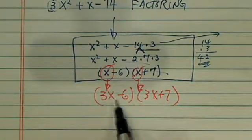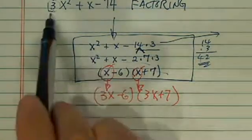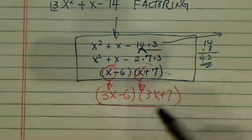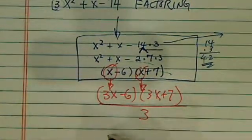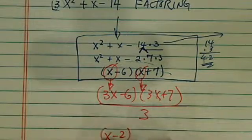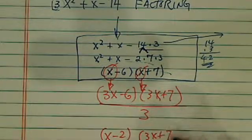Now, you notice 3x times 3x is going to be 9x squared, and we started with 3x squared. So I'm going to divide it by 3, and you simplify from here. You get the answer of x minus 2 times 3x plus 7. That's your answer.